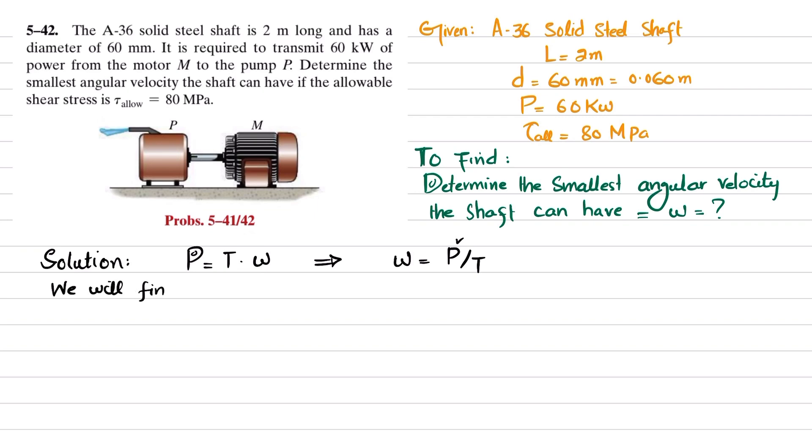How will we find this torque T? We know that allowable shear stress is equal to T times c divided by J. From here you get torque is equal to allowable shear stress times J divided by c. The allowable shear stress is given as 80 megapascals.